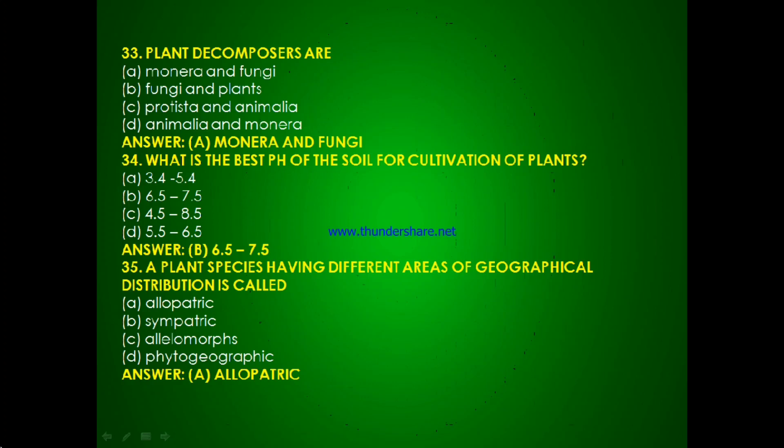Question 32: What is the best pH of the soil for cultivation of plants — 3.4 to 5.4, 6.5 to 7.5, 4.5 to 8.5 or 5.5 to 6.5? The answer is B, 6.5 to 7.5. Question 33: A plant species having different areas of geographical distribution is called — allopatric, sympatric, allelomorphs or phytogeographic? The answer is A, allopatric.